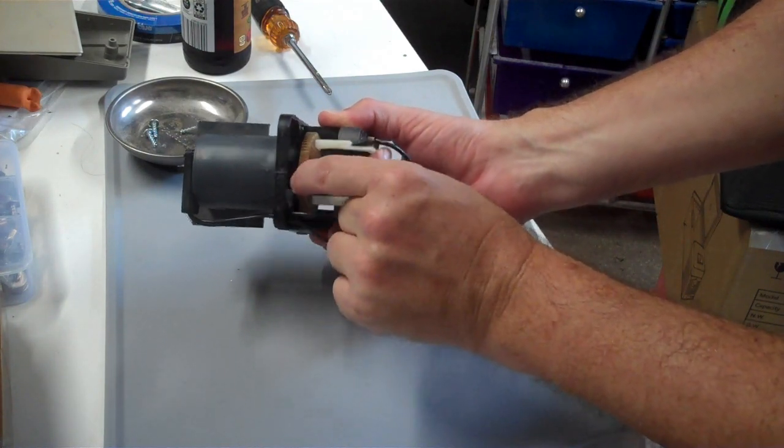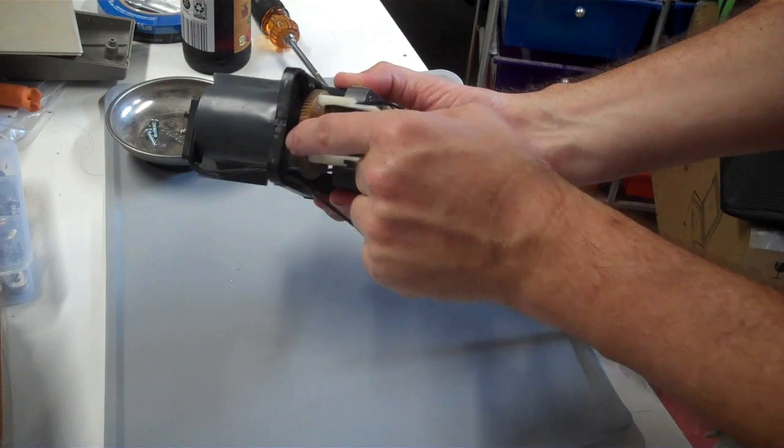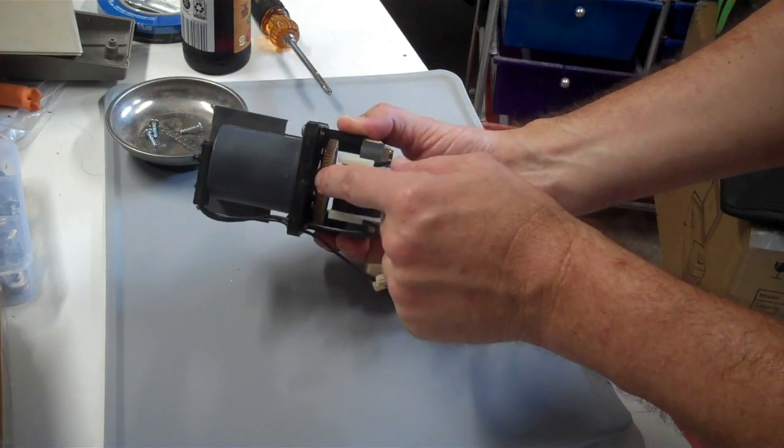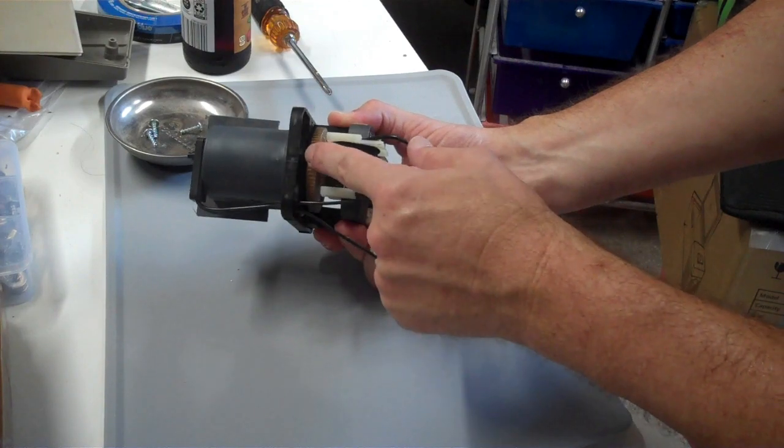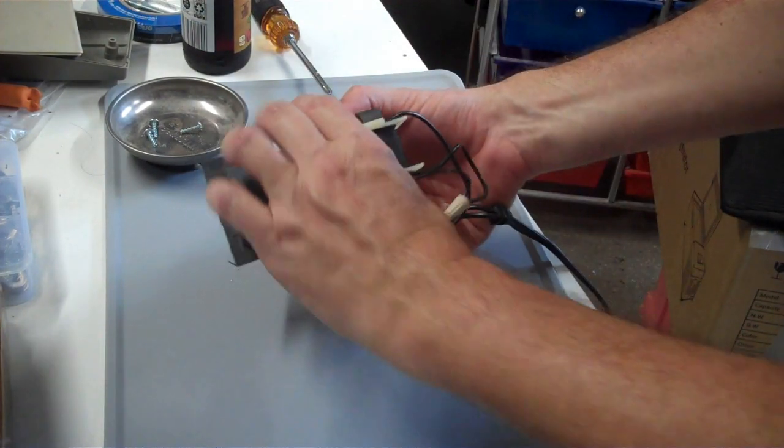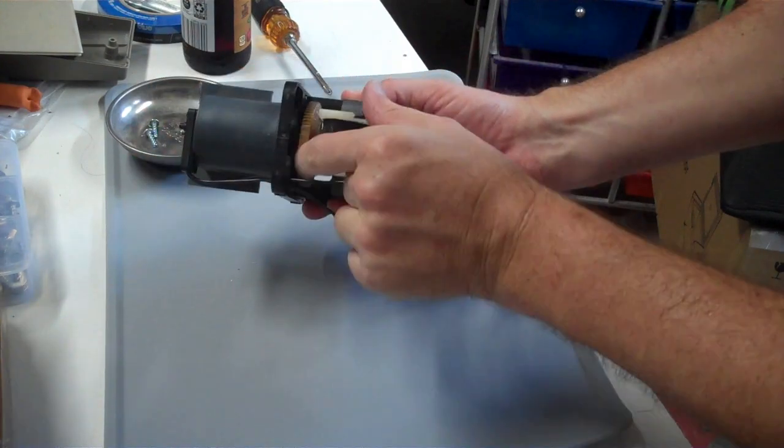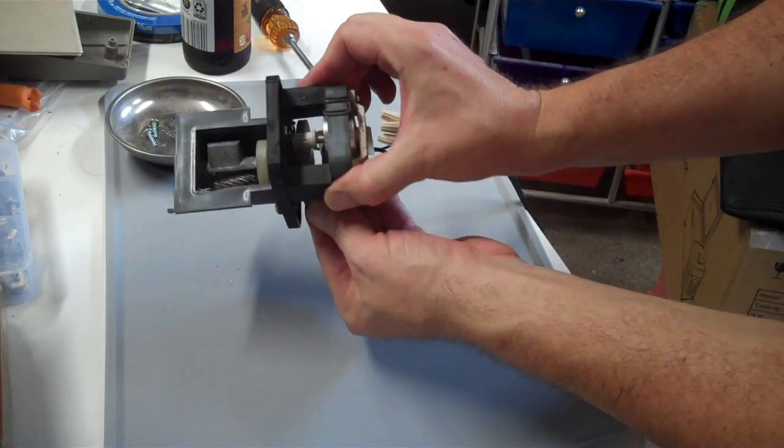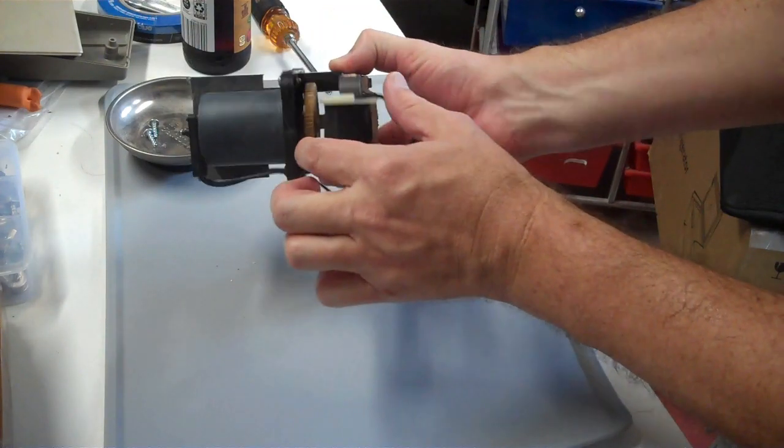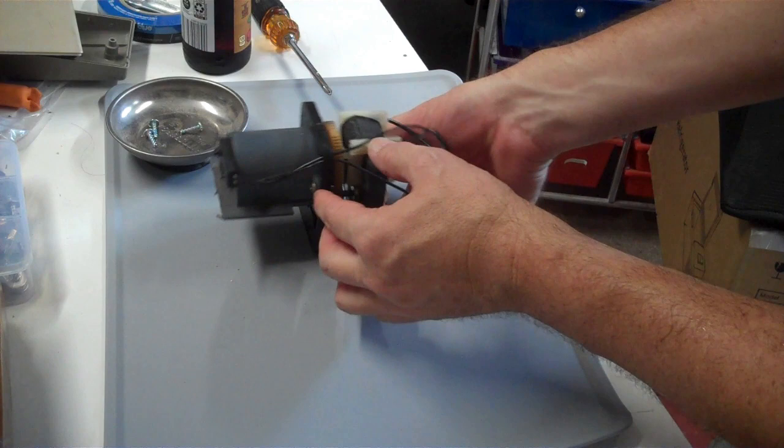So this main gear has some teeth worn off of it. This particular gear here is made of a plastic that ages and will start to crack and crumble. I've seen them break completely in half or just have gears worn down. And so that will spin until it hits where that worn down gear is with this gear, and then it'll just stop spinning. So you need to replace this gear to fix that.